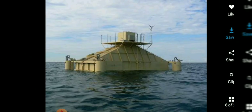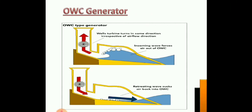This is a model of an ocean wave current generator. Looking at the cross-sectional figure, when the wave comes in, the air flow rotates the rotor continuously.